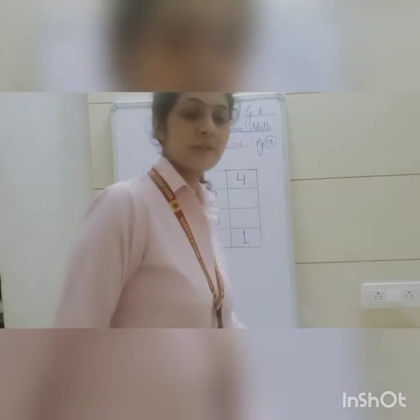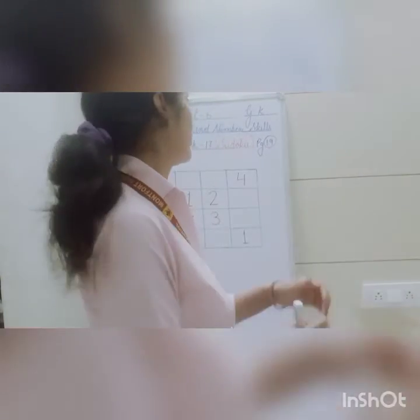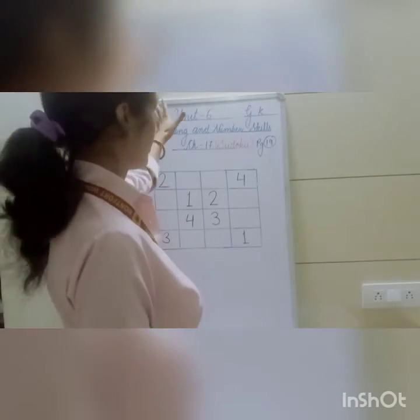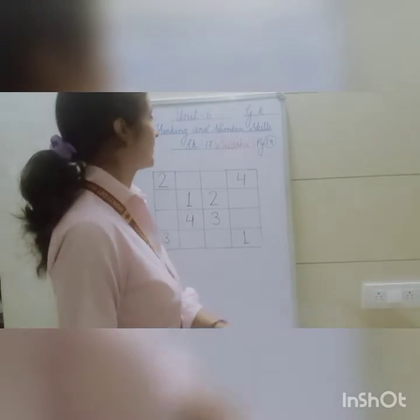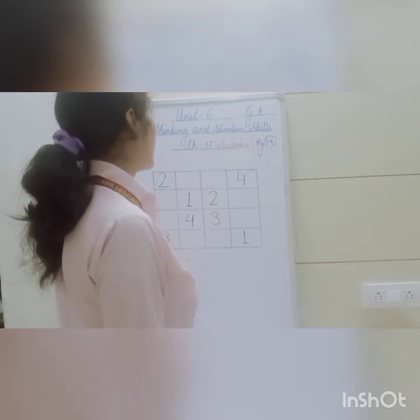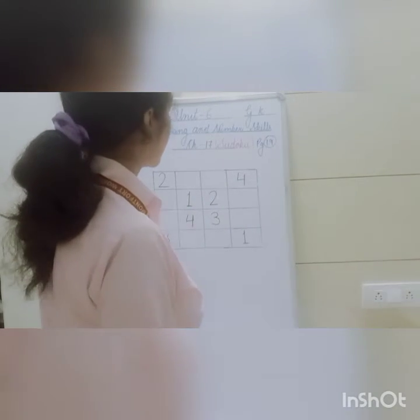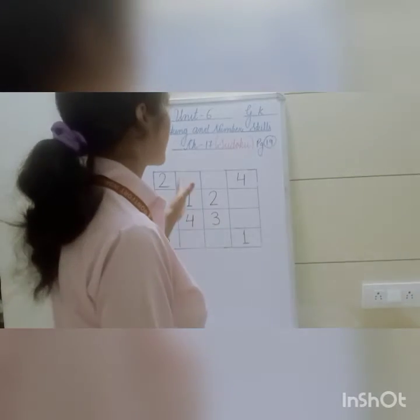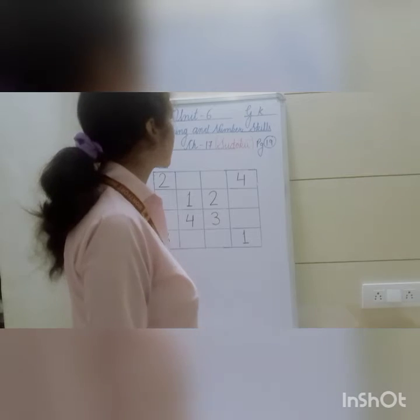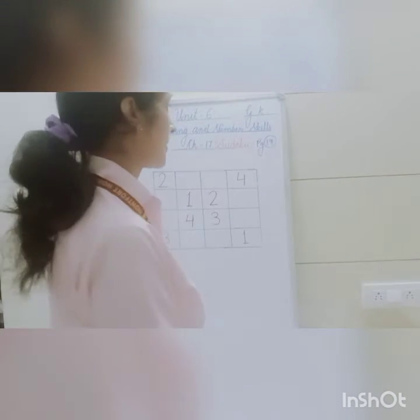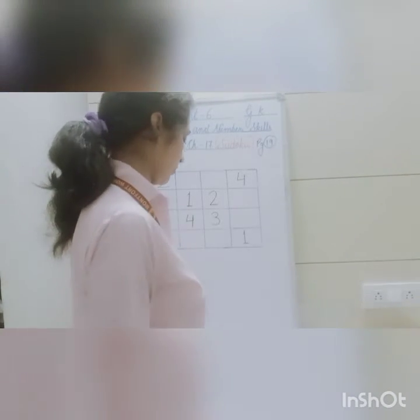Good morning my dear students. I hope you all are sitting down. We are going to start with Unit 6 of GK. Open your page number 19. Unit 6 name is Thinking and Number Skill. It is chapter number 17 and the chapter name is Sudoku.